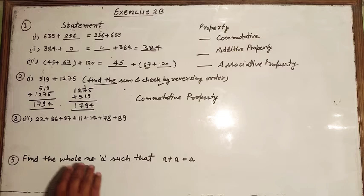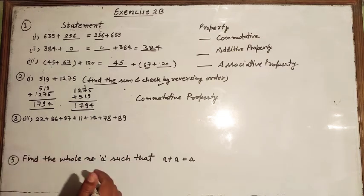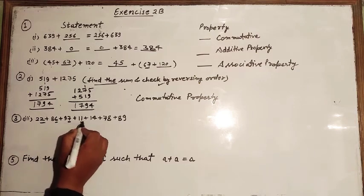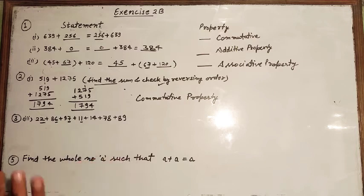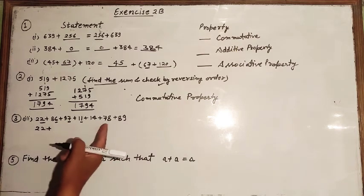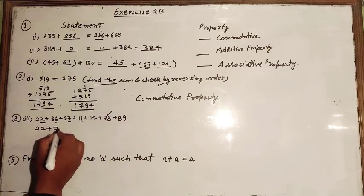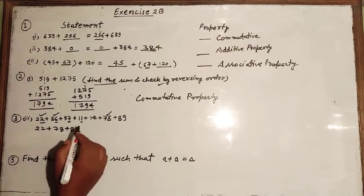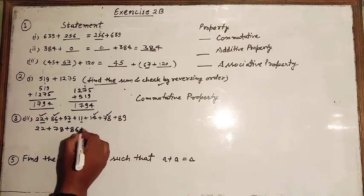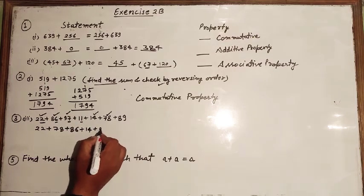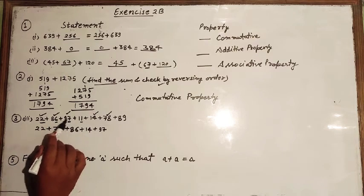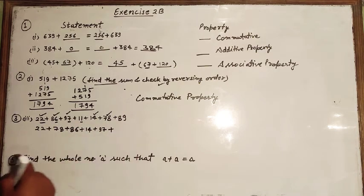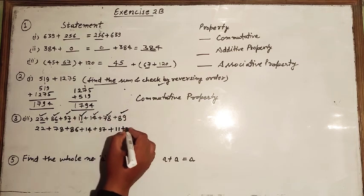Question number three: find the sum with a suitable arrangement. We check the unit digits: 6, 2, 6, 7, 1 are present. We make pairs whose unit digits sum to zero. Add 22 and 78 to get a unit digit of zero. Then 86 and 14 give unit digit zero. Then 97 is written as it is, and the remaining number is 89.